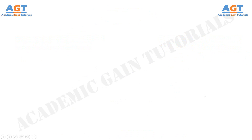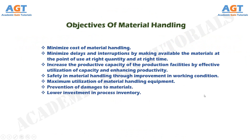Prime objectives of material handling include: minimize cost of material handling; minimize delays and interruptions by making available the materials at the point of use at the right quantity and at the right time; increase the productive capacity of production facilities by effective utilization of capacity and enhancing productivity; safety in material handling through improvement in working conditions; maximum utilization of material handling equipment; prevention of damages to materials; and lower investment in process inventory.